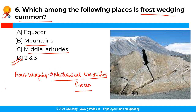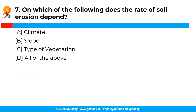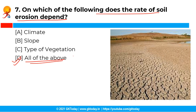The next question is: on which of the following does the rate of soil erosion depend? The correct answer is option D, that is all of the above. Soil erosion is a natural part of matter recycling. The rate of soil erosion depends on climate, slope, type of vegetation, characteristics of soils, and other factors.